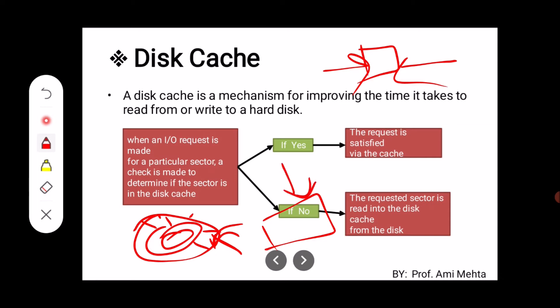But if not, then the requested sector is read into the disk cache from the disk. The requested sector is read from the disk and written into the cache memory. If it is already there, the request is satisfied via the disk cache.